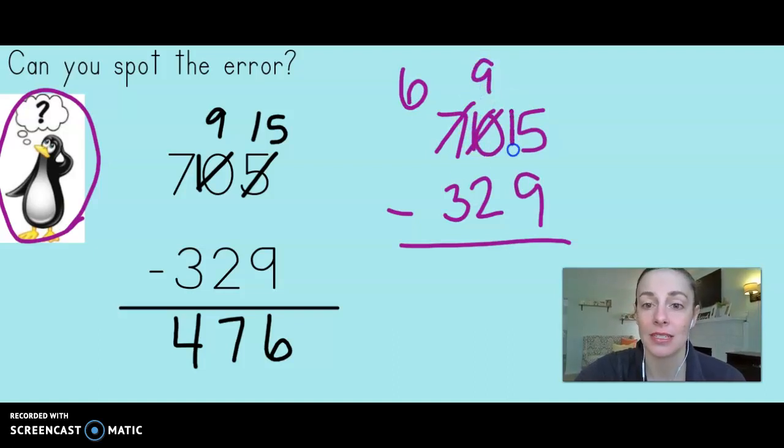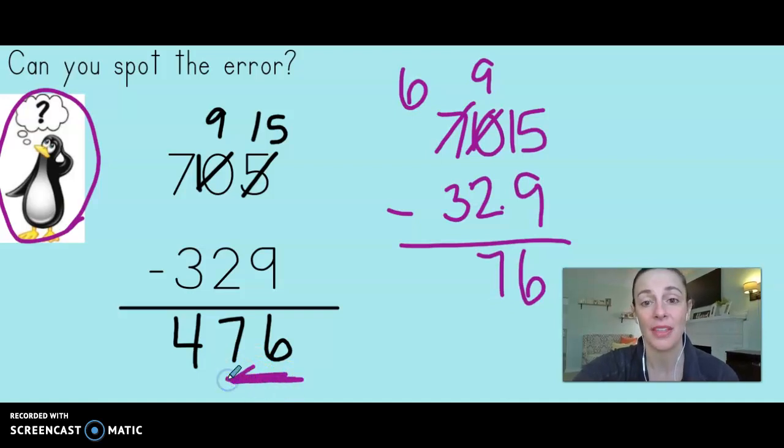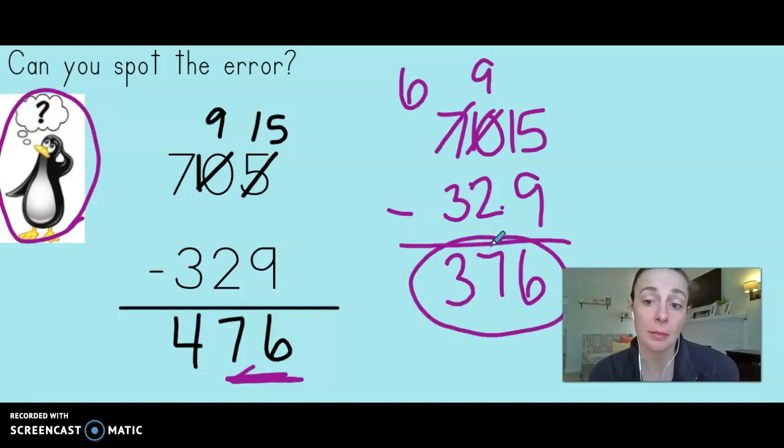Now he would be ready to subtract. So 15 minus nine, he was right, is six. That's good. He was right on these two. But the hundreds is where he made his mistake. We have six minus three. That gives us three left. So he really only made one tiny mistake. What he did is he took something from the hundreds, but he didn't ungroup it. So he was really close, but he just made that one little error.